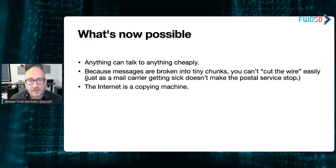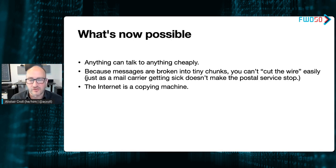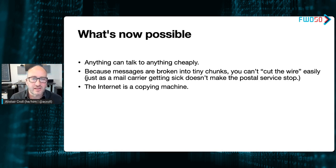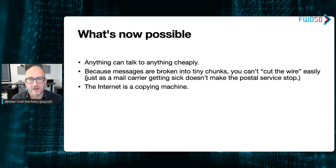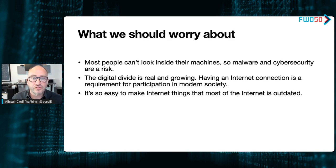This means anything can talk to anything cheaply. Because messages are broken into tiny chunks, you can't cut the wire easily — if one mail carrier gets sick, the postal service doesn't stop. Because of this modularity, the internet is just a machine for making copies and getting them where they need to go — little tiny chunks sent all over the place. That's all you really need to know about the internet.